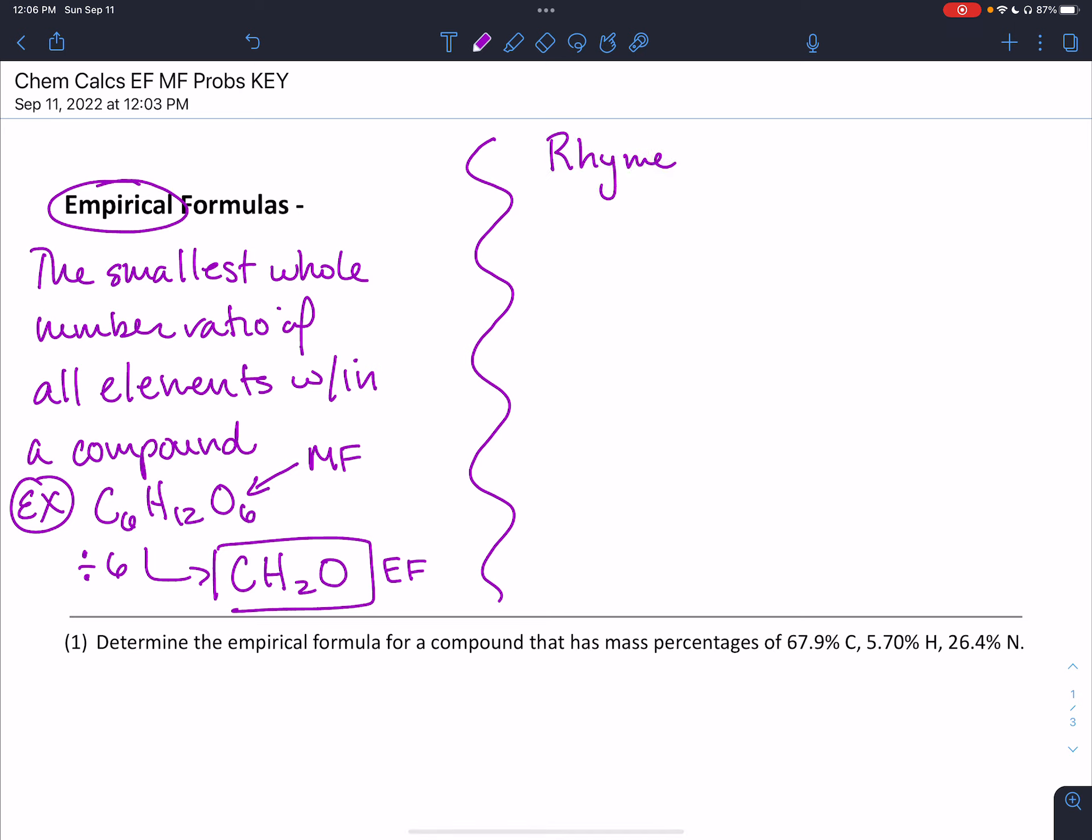There's a rhyme I like to teach for working these problems. The first step is percent to mass, then we convert mass to moles. Next, we divide by the smallest, and if needed, multiply until whole.